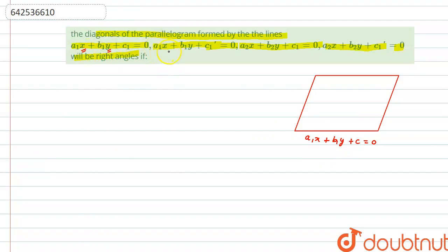If we see this other line, the second line, the coefficient of x and y are same. Hence, these both lines are parallel because their slopes will be equal. Therefore, if parallel, then the other side will be a1x plus b1y plus c1 dash equal to 0. So, these are two lines.